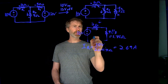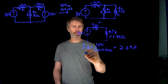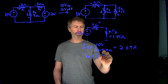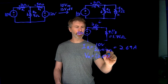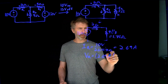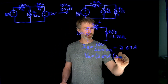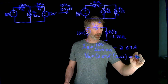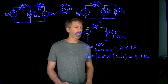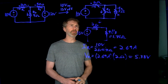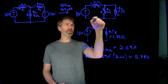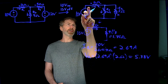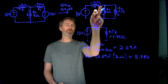The next thing I can figure out is the voltage across R1, since I now know the current through it. I take that 2.69 amps and multiply by the resistance, giving 5.38 volts across that 2-ohm resistor. Going back to the original circuit with the 10-volt source on, I've got a 10-volt source and a 5.38-volt drop across the 2-ohm resistor.